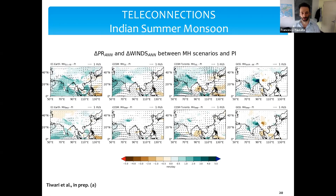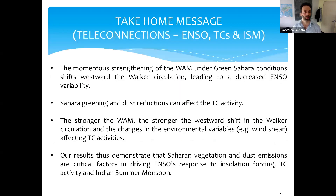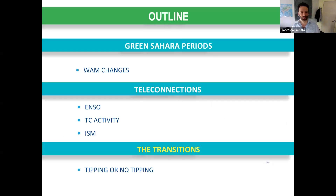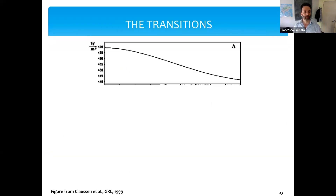The take-home message of the teleconnections section is that the strengthening of the West African monsoon and Green Sahara conditions shift the Walker circulation westward, which causes the decrease in ENSO variability. The Sahara greening is also able to affect tropical cyclone activity. Our results demonstrate the impact of Sahara vegetation on tropical cyclones and the Indian summer monsoon. Now let's address whether the Green Sahara is or is not a tipping element.